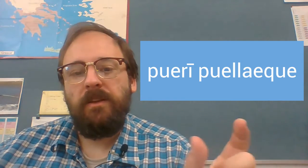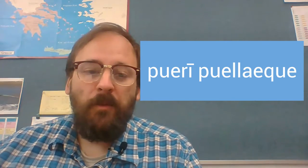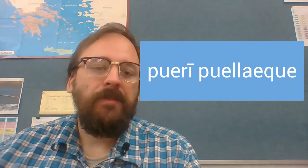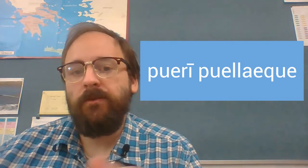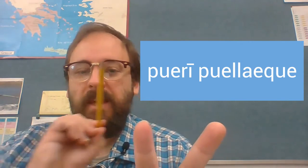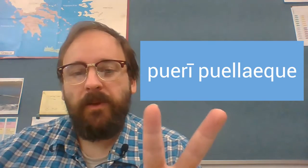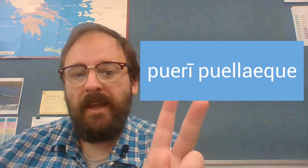It's tacked on to the last word. In grammar, we call this an enclitic. It leans upon another word rather than being its own separate word. When we have two things together, we like to put the and in the middle, so we can link these two things together: boys and girls.